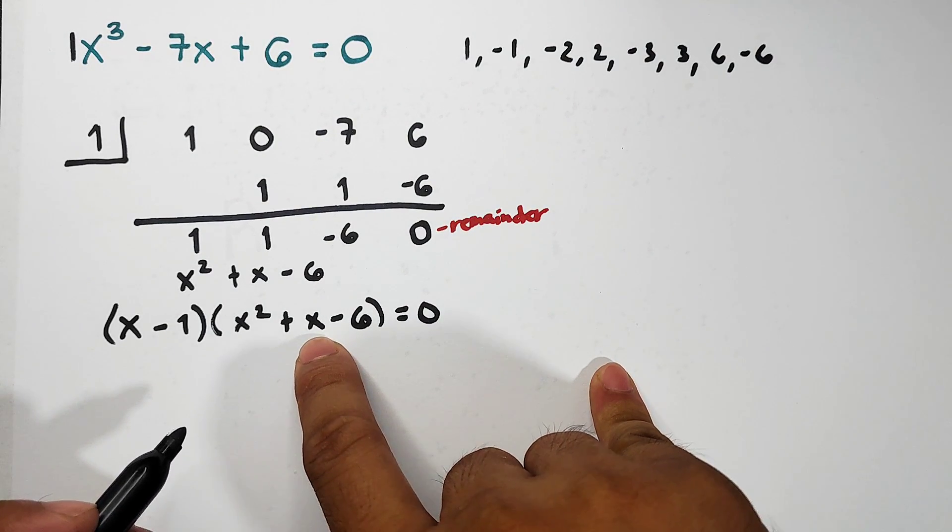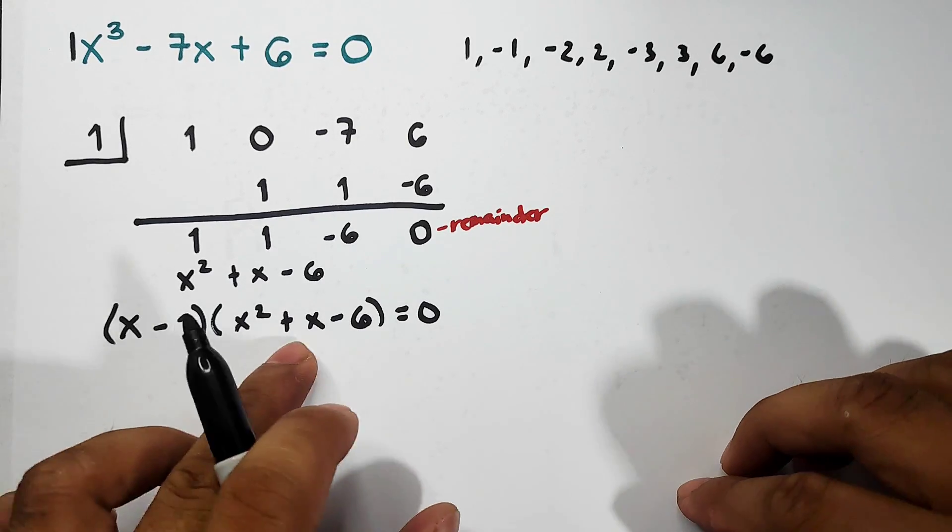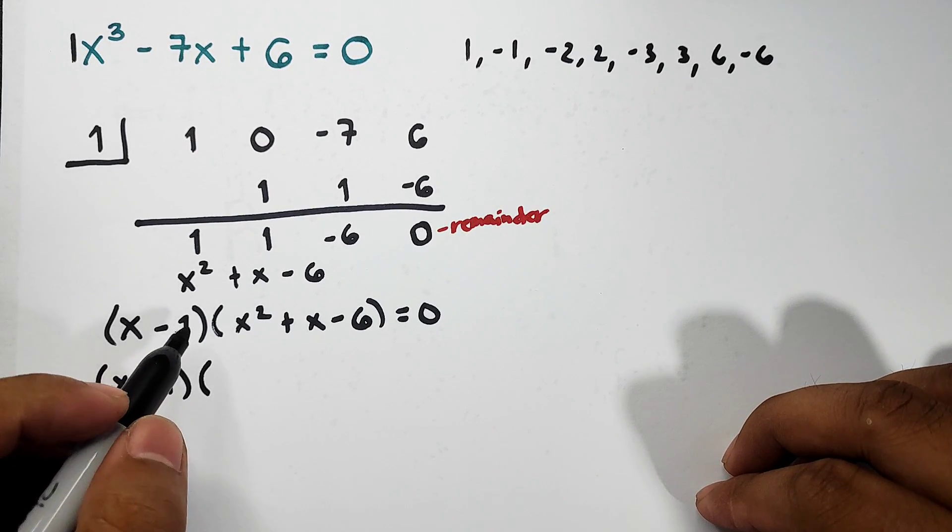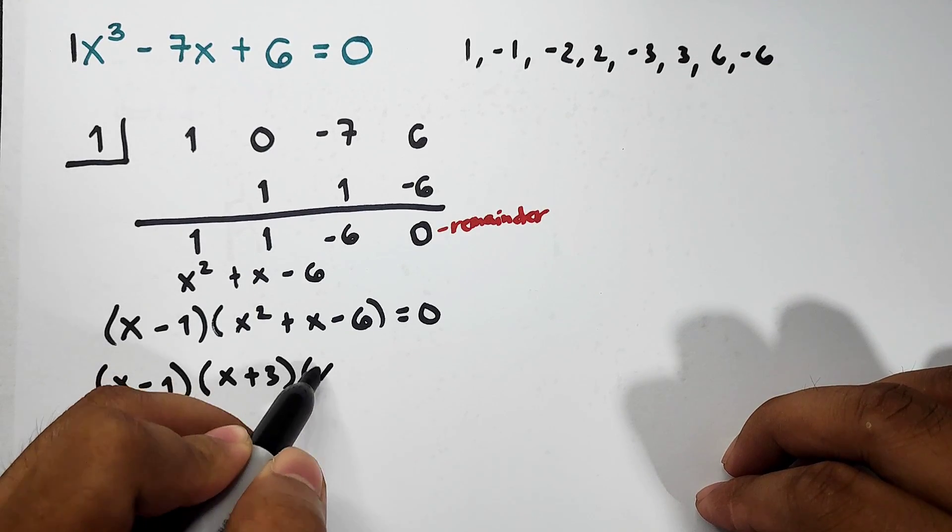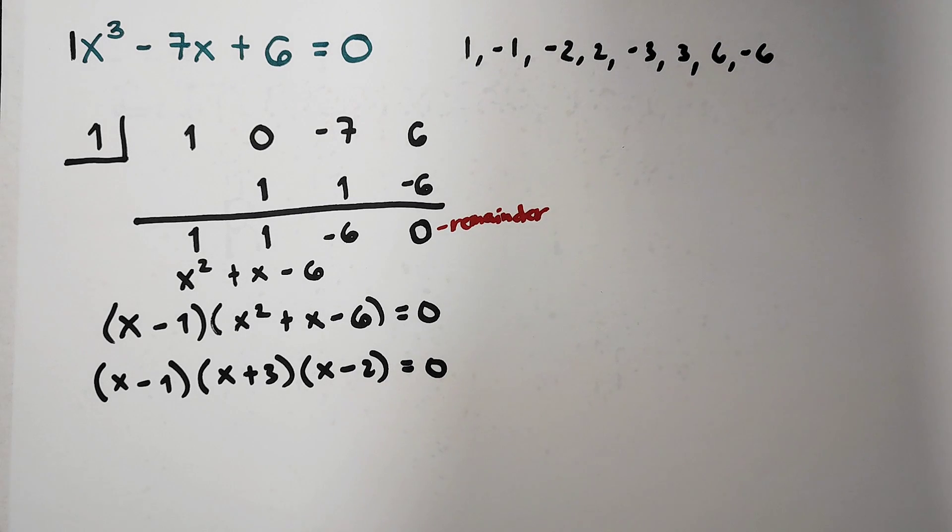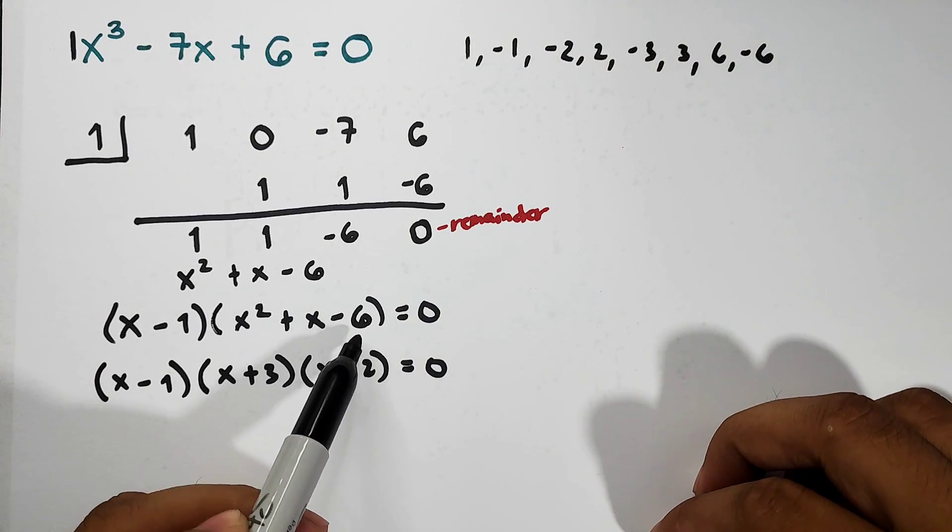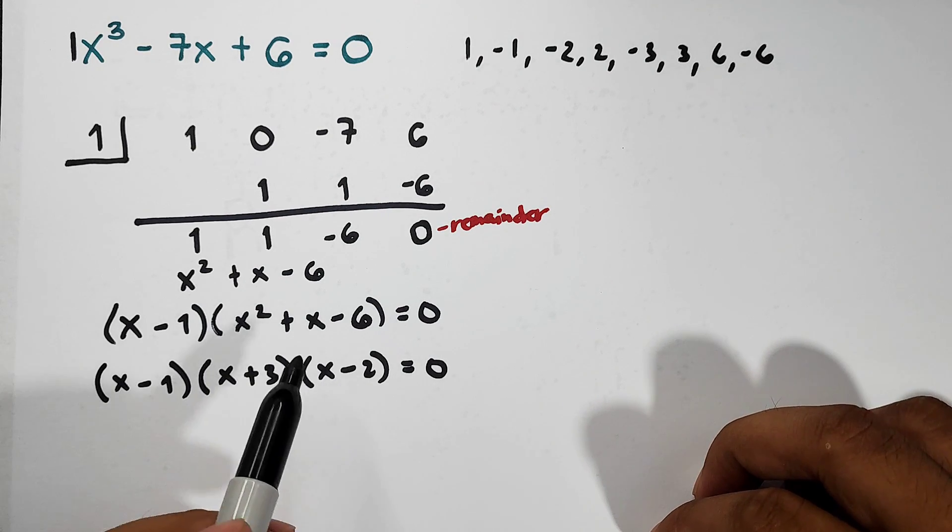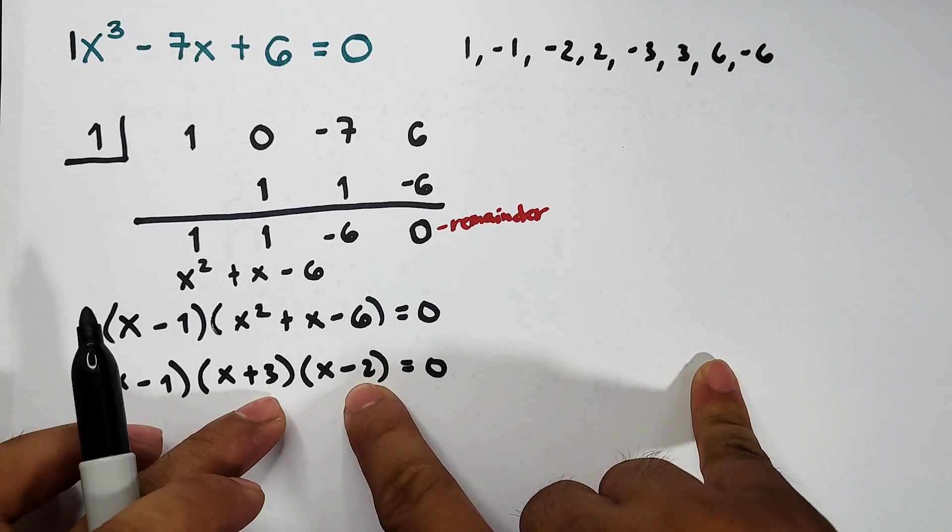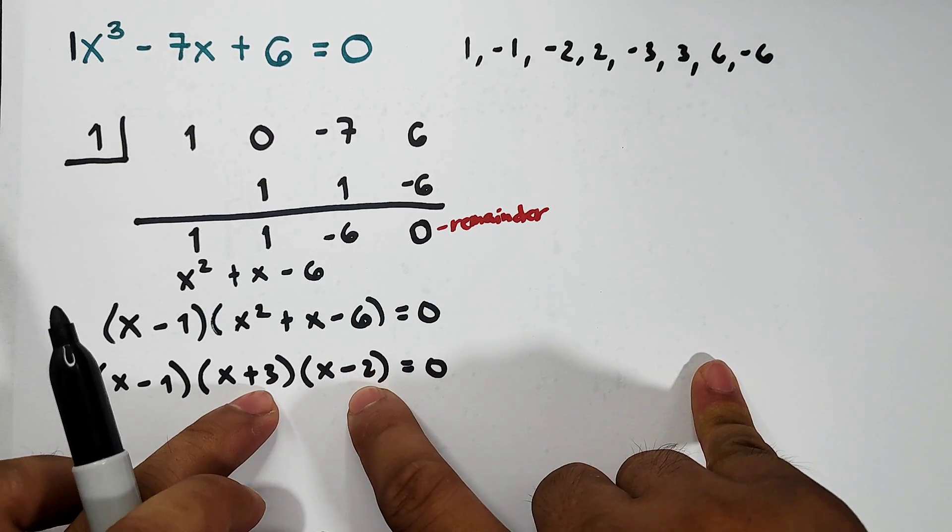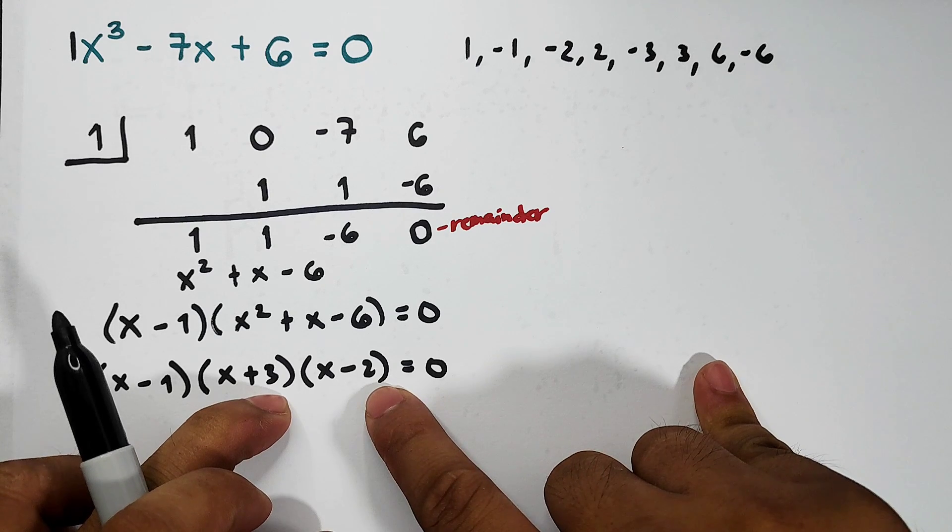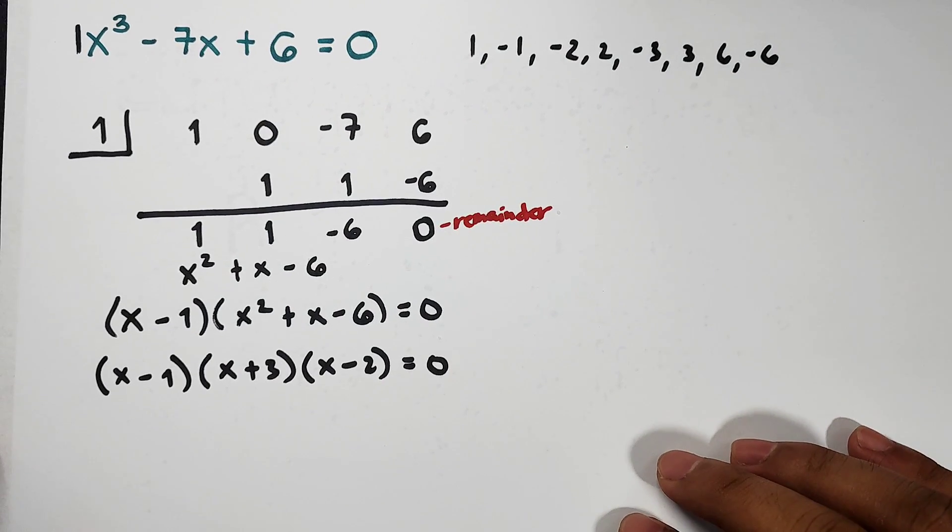The second factor became quadratic, so this one is quite easy to factor. Let's factor x squared plus x minus 6. The factors are x minus 1, then x plus 3, then x minus 2, equal to 0. Why did it become x plus 3 and x minus 2? Going back to quadratic equation, since our constant is negative 6, the signs should be different. And since the coefficient is positive 1, when you add the constants, negative 3 times negative 2 is negative 6, and when you add them, the sum should be the coefficient of the middle term which is 1. So 3 plus negative 2 is positive 1. Definitely these are the factors.